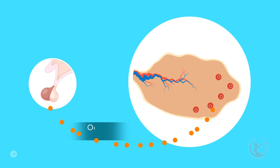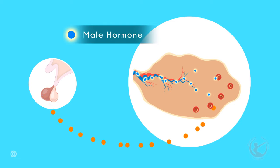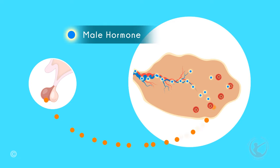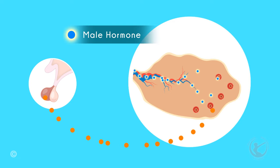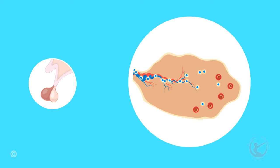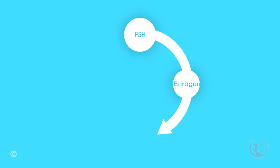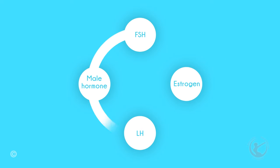The LH is unable to stimulate ovulation and in this case causes these follicles to produce male hormone and male hormone derivatives, which contribute to some of the male hormone effects associated with PCOS. These male hormones further inhibit ovulation, therefore leading to a vicious cycle.